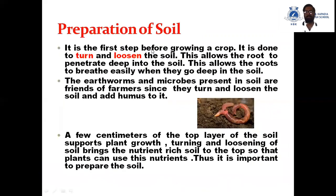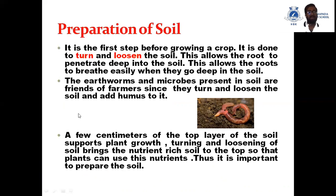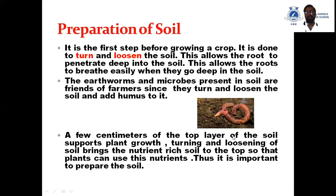First, preparation of soil. In the first step before growing a crop, it is done to turn and loosen the soil. This allows the roots to penetrate deep into the soil and breathe easily. Earthworms are friends of farmers because they turn and loosen the soil and add humus into it.